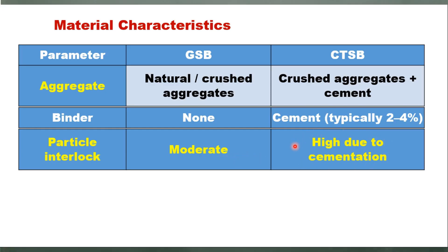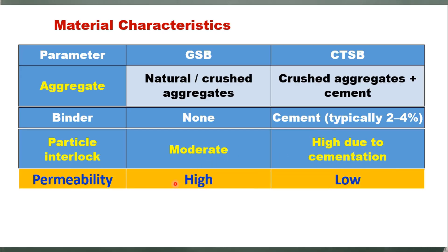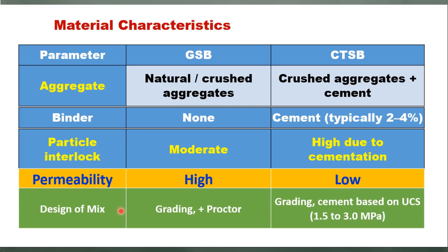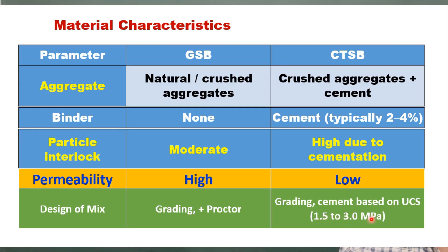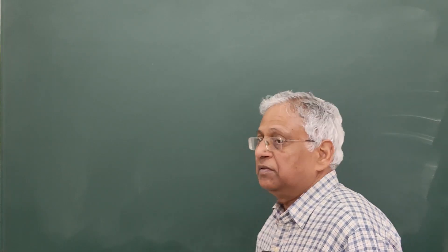In the case of CTSB, particle interlocking is quite high because of cementation. Permeability in GSB is high due to high voids, whereas it is low in CTSB, and for that reason GSB is preferred when the water table is high. Mix design for GSB is based on grading plus a Proctor test to find optimum moisture content and maximum dry density. For CTSB, the final mix design is based on the unconfined compressive strength, which should be in the range of 1.5–3 MPa as per IRC-37.